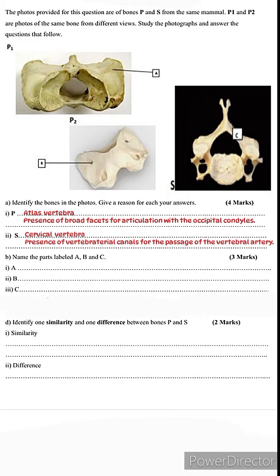Moving on to part B: name the parts labeled A, B, and C. Part A is the transverse process. The transverse process provides a large surface area for the attachment of muscles. Remember, one of the most important functions of the skeleton is to provide a surface for attachment of muscles which are necessary for movement. B is a vertebraterial canal.